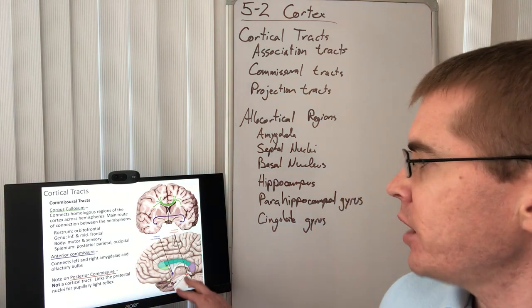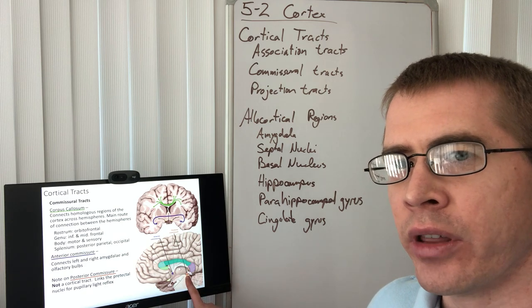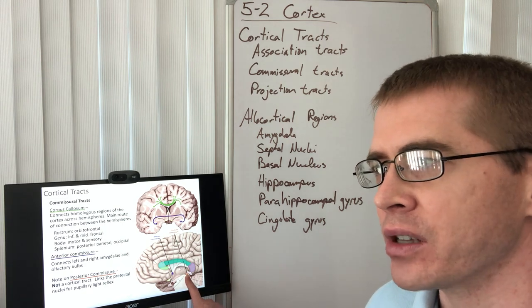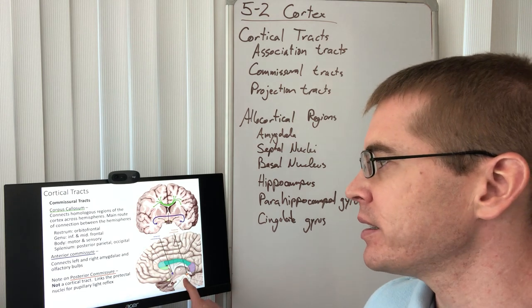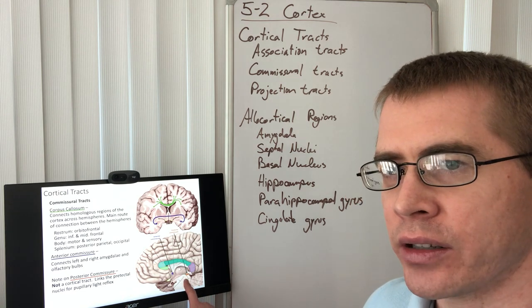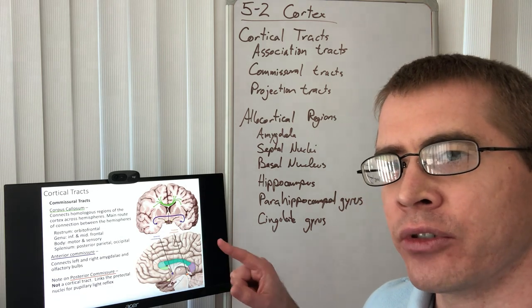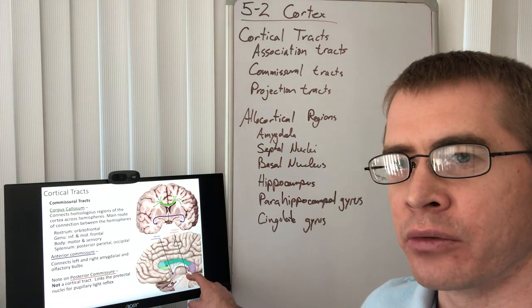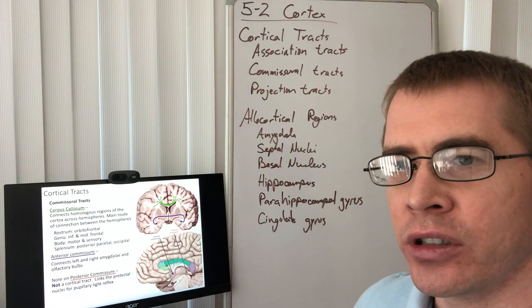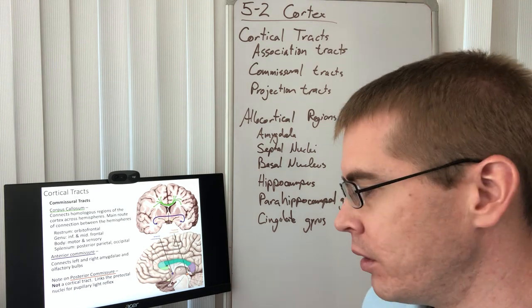So we've talked before about the posterior commissure. And we talked about its function with the pupillary light reflex. Posterior commissure, though it's named a commissure, is not considered a cortical tract. It's not in the same category because it is only sending information between the small tectal regions in the posterior midbrain. It does not have any information from cortical neurons.